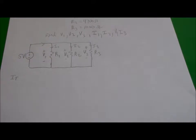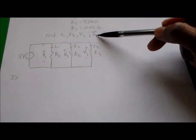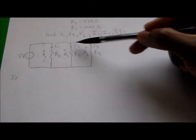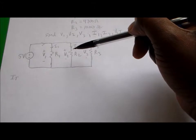You've been asked to find voltage 1, voltage 2, voltage 3, current 1, current 2, and current 3 that's going through this circuit.